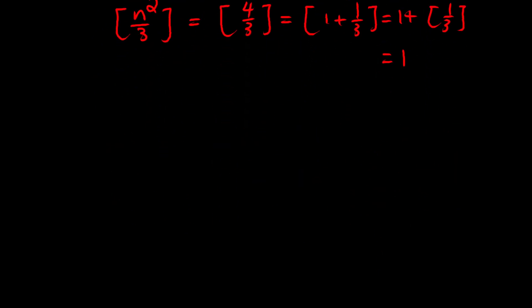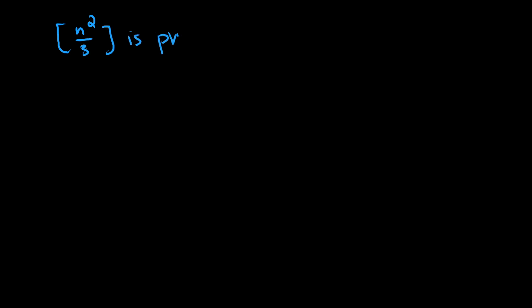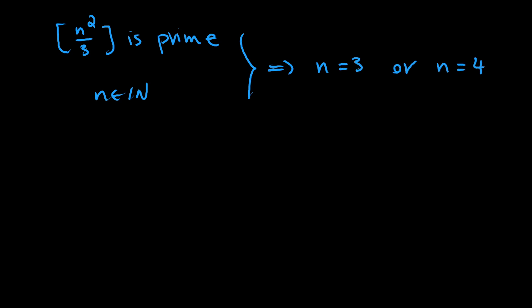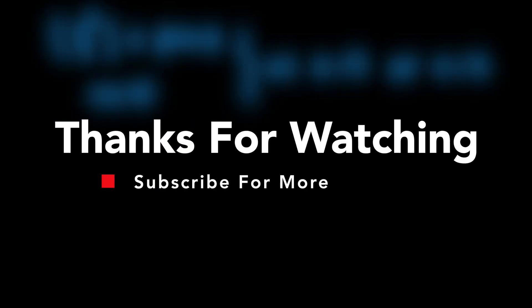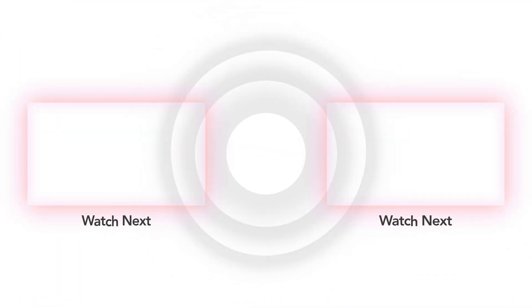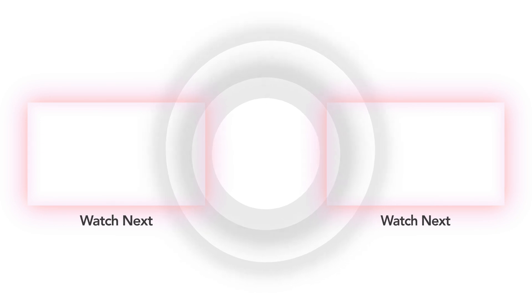So if the floor of n² divided by 3 is prime, where n is a natural number, the only solutions are n = 3 and n = 4. Thank you for watching — please consider subscribing for more content like this, and hit the like button if you find this video helpful. Goodbye for now!